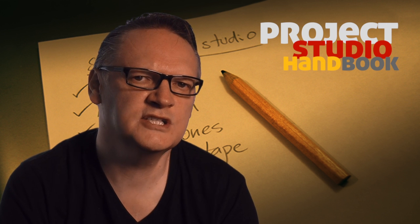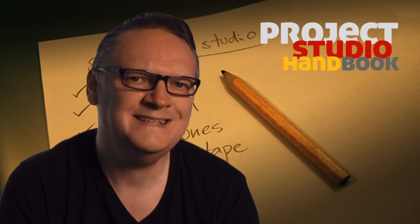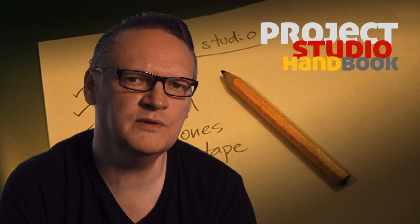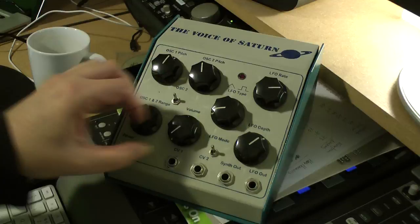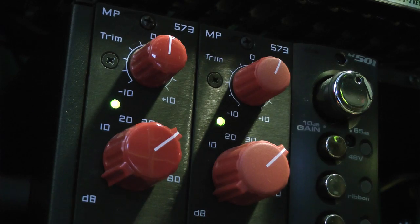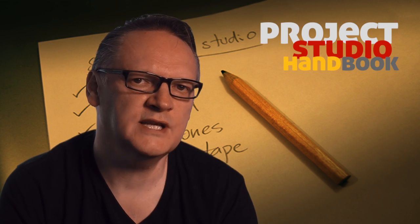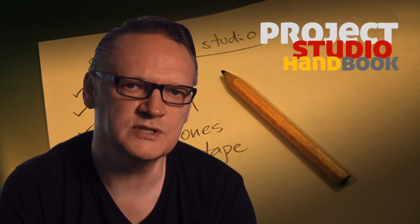To test a device's frequency response, a test tone containing multiple frequencies at equal amplitudes, typically between 10 Hz and 30 kHz, is sent to the device. The output is then analysed to see which frequencies have been altered.